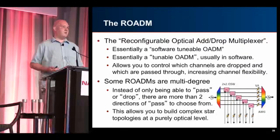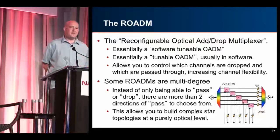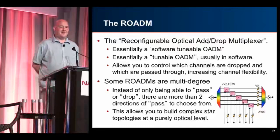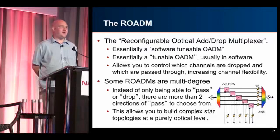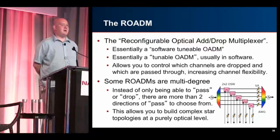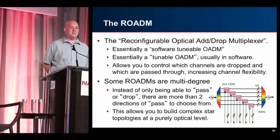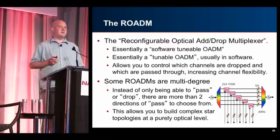The modern world is mostly built with ROADMs — reconfigurable optical add-drop multiplexers. A ROADM is the exact same thing as an OADM but reconfigurable — essentially a software-tunable OADM. It allows you to control which channels are dropped and passed through, increasing channel flexibility. You don't need to buy a specific component, rack it, install it, cable it, and know it will only ever drop those specific four channels. You can grow and change your topology over time by just logging into the box and changing the channels you want to drop. Modern ROADMs are multi-degree, so you can build things other than simple rings.